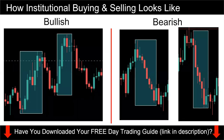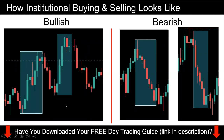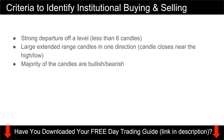Let's move on to a brief introduction of how institutional buying and selling looks like. You have the bullish example on the left and the bearish example on the right. In the bullish example, you can see that price is very explosive. The boxes I've drawn are what I call institutional buying and selling. The first criteria is that we want a strong departure of a level — ideally less than six candles before price bursts in a single direction.